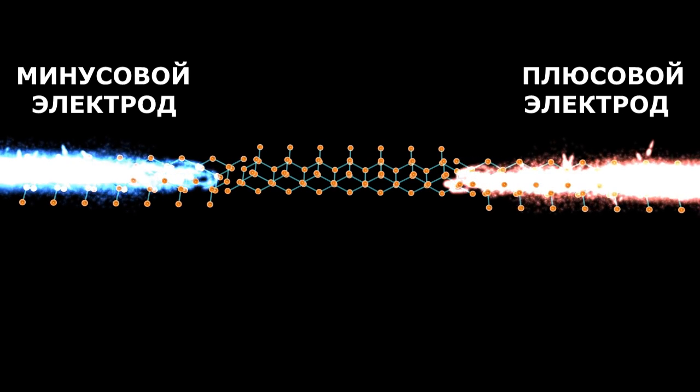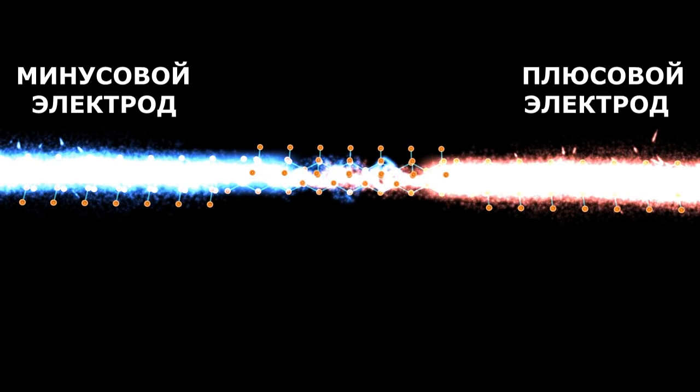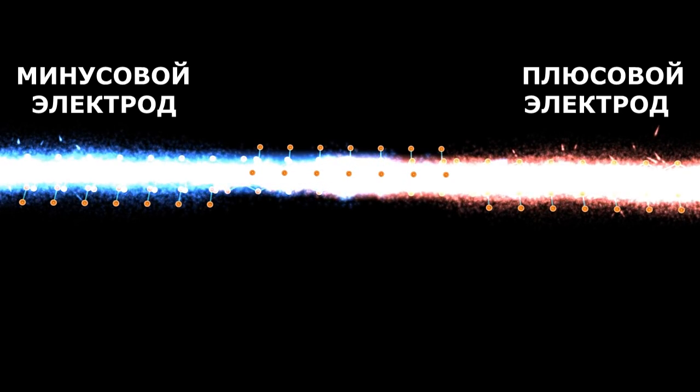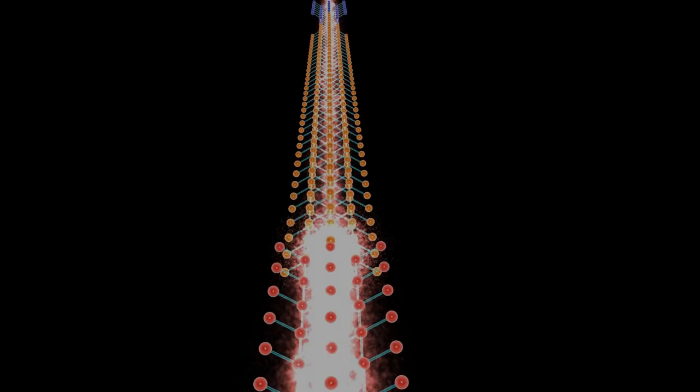Now let's make a conclusion. If we say that the current flows from plus to minus, it will not be incorrect, but only if we add that we speak about positive charge movement. If we say that the current flows from minus to plus, adding that we speak about electrons movement, it will also be true.